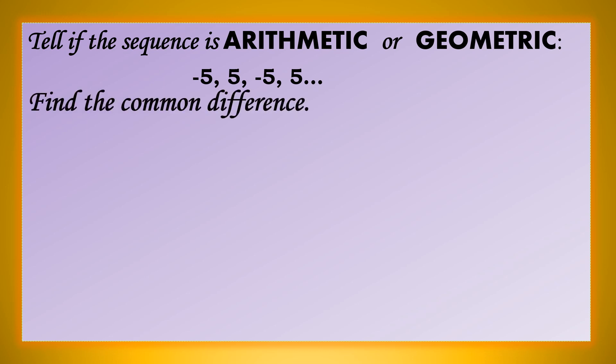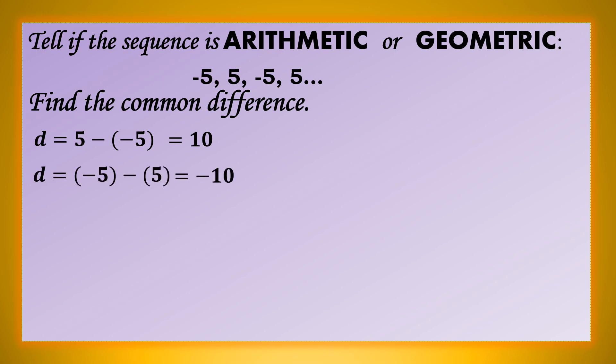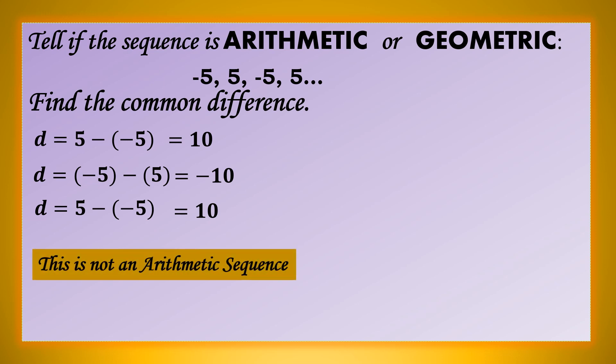Check natin. Let us find the common difference. Ang second term ay 5, ang first term ay negative 5. So 5 minus negative 5 is 10. Yung third term natin ay negative 5, ang second term ay 5. So negative 5 minus 5 is negative 10. Ang fourth term natin ay 5, ang third term ay negative 5. So 5 minus negative 5 is 10. Yung una 10, sunod negative 10, sunod positive 10 — there is no common difference. This is not an arithmetic sequence.